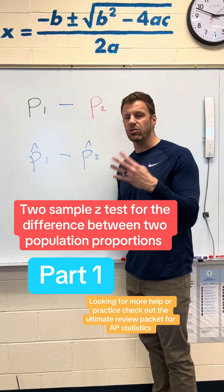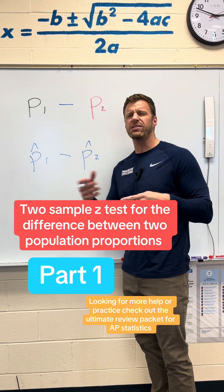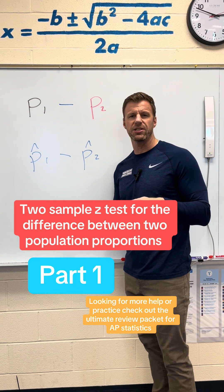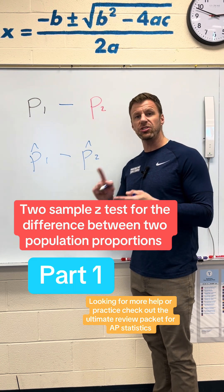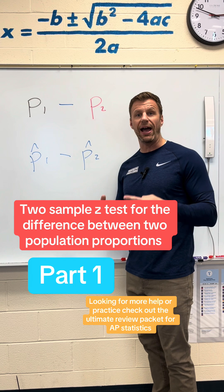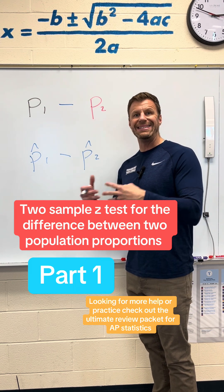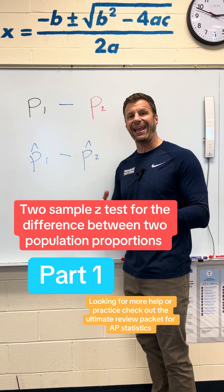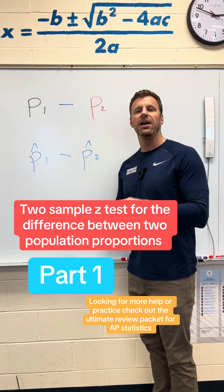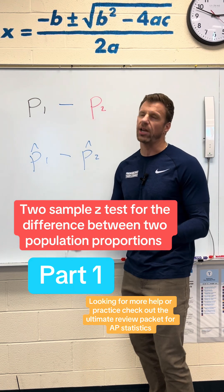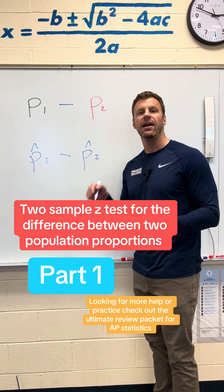A test has four pretty simple steps — some people will say three, it all depends on what you include. Essentially, step one is to define the parameter of interest, name the test, and give our hypotheses. Step two is to check those pesky conditions to make sure we're allowed to conduct the test.